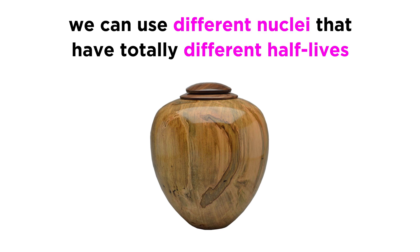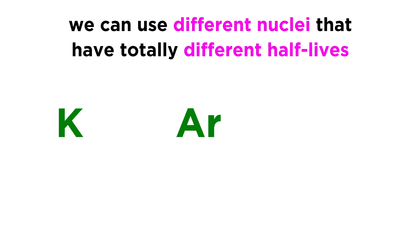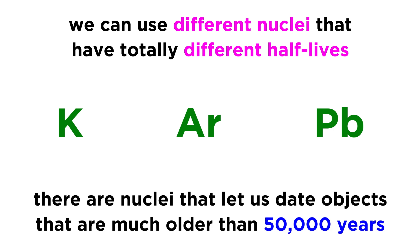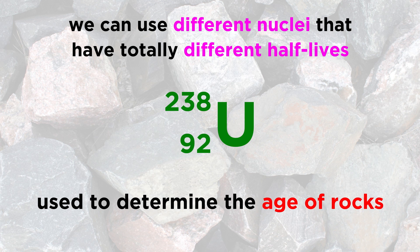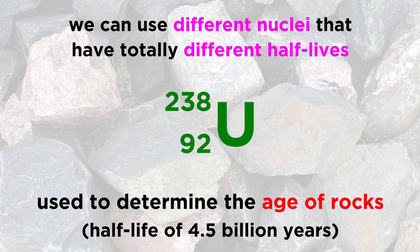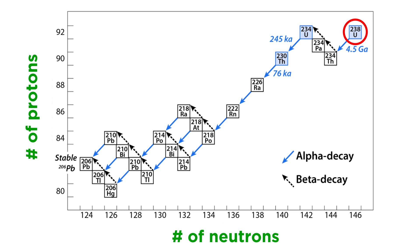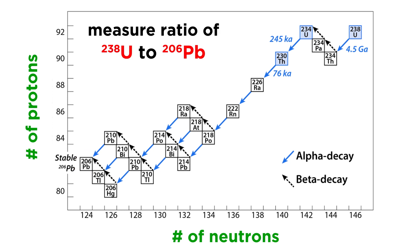However, there are many other radioactive nuclei that we can use that have totally different half-lives, and thus allow us to date objects of a wide variety of ages. Potassium, argon, lead — these all have radioactive isotopes that can be examined if an object in question contains appreciable amounts of that element, and many of these allow us to date objects much older than 50,000 years. Uranium-238 is commonly used to determine the age of certain rocks, including the oldest rocks on earth, since this particular nuclide has a half-life of 4.5 billion years. Uranium-238 undergoes a decay series to produce lead-206, so we simply measure the ratio of uranium-238 to lead-206 in a rock to get its age.